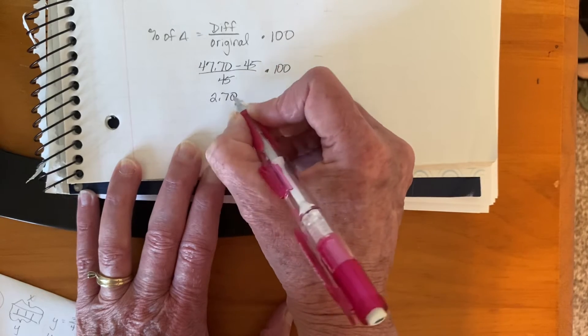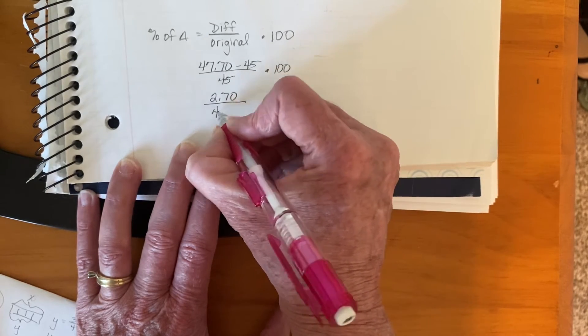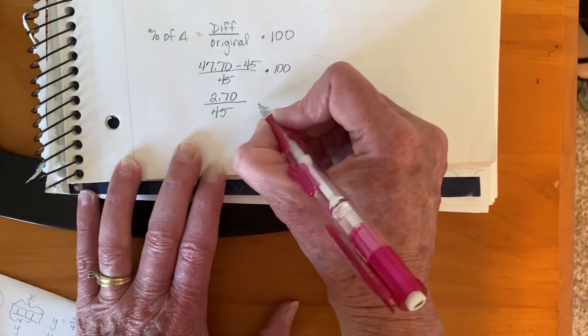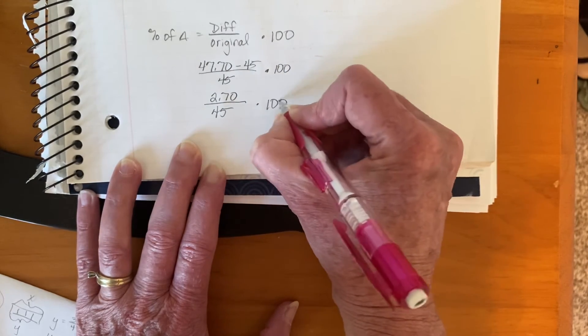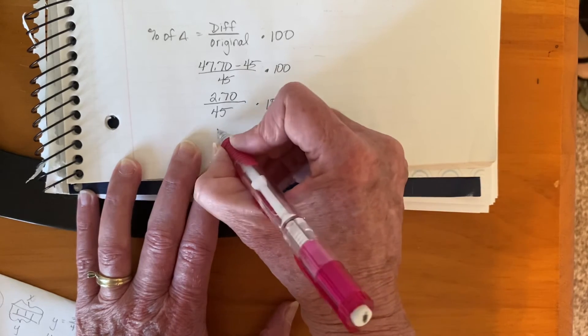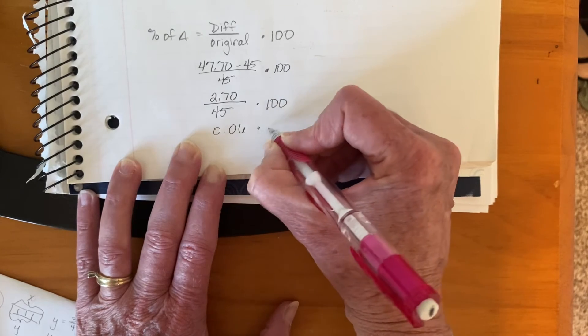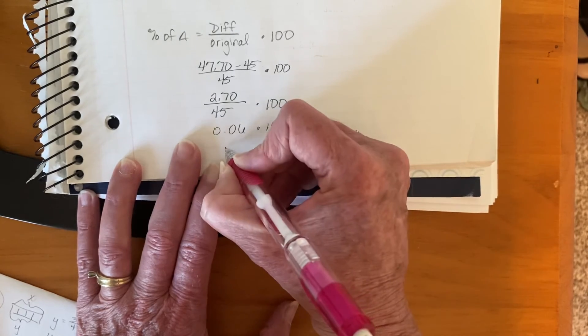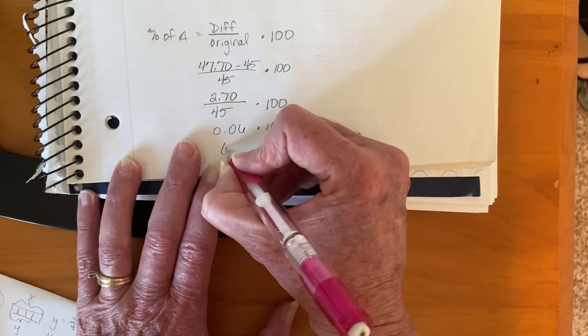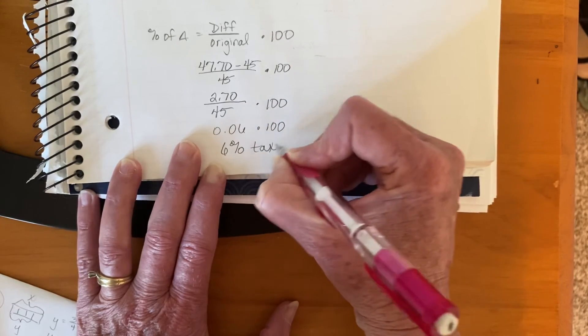Now that $2.70 is the tax he paid and we want to know what percent is that of the original price. So $2.70 divided by 45 is 0.06. We're going to multiply it by 100. So that means the tax rate was 6%.